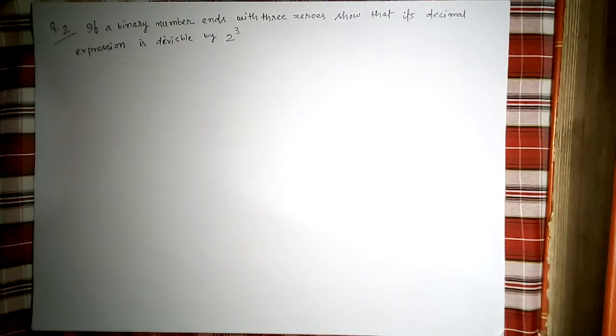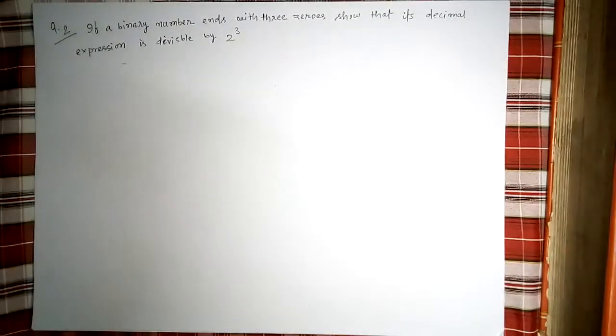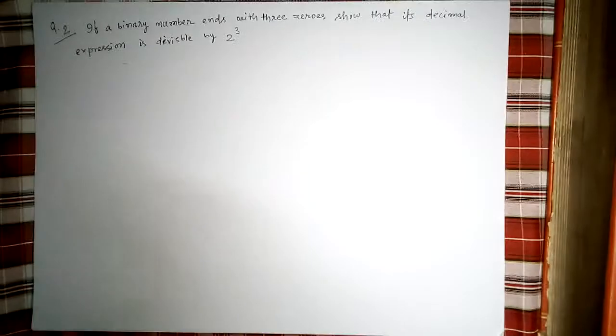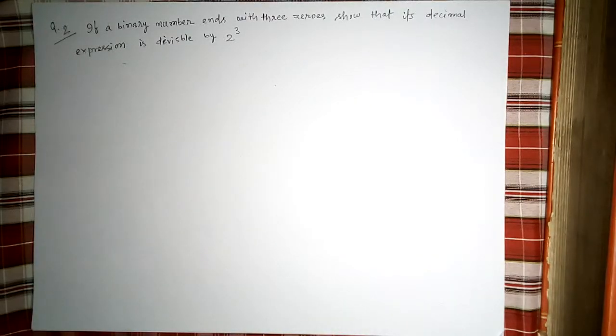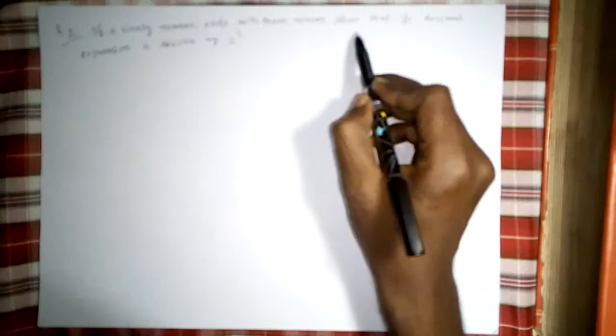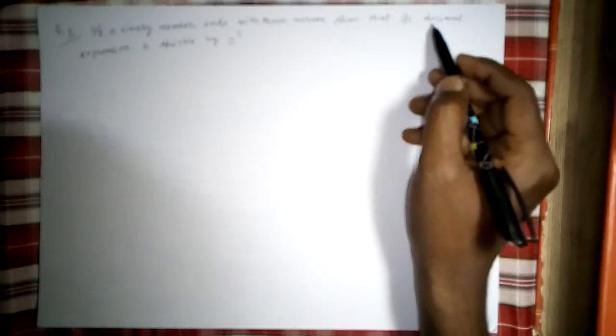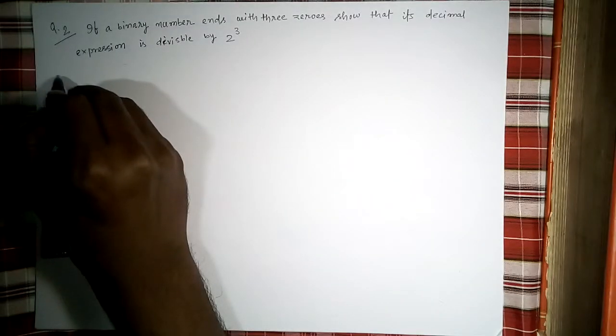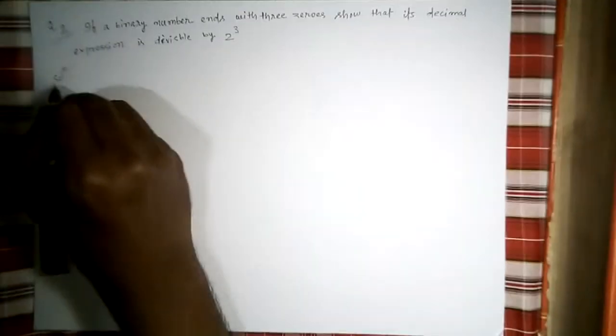Here is another question on binary numbers. This question says that if a binary number ends with three zeros, then its decimal expression is divisible by two to the power three. Let's start the solution.